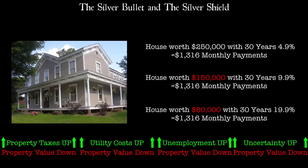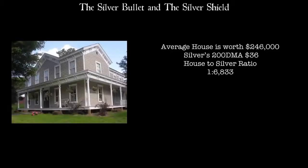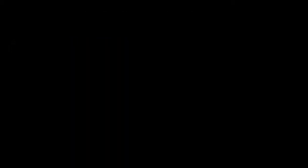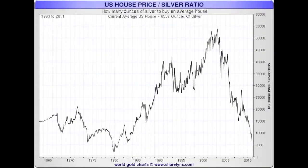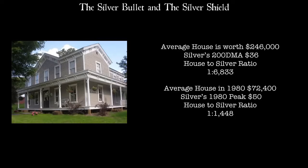The time to buy property is when there's blood on the streets — Baron Rothschild. So real estate is out in my book. The average home price is about $246,000. The 200-day moving average of silver is at $36, so we are at a 1 to $6,833 house-to-silver ratio. Judging by my first chart, we could still see a 400% real return in the house-to-silver ratio — just to get back to the 1980 high, where the average house was $72,400 and silver popped to a $50 high, making that ratio 1 to $1,448.